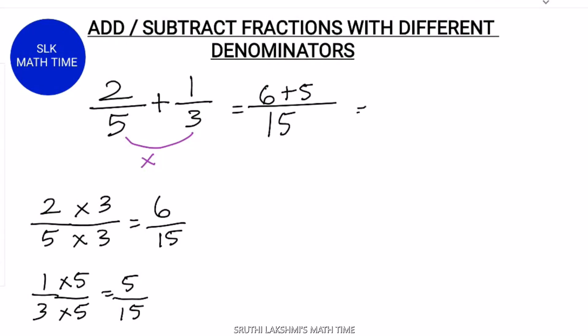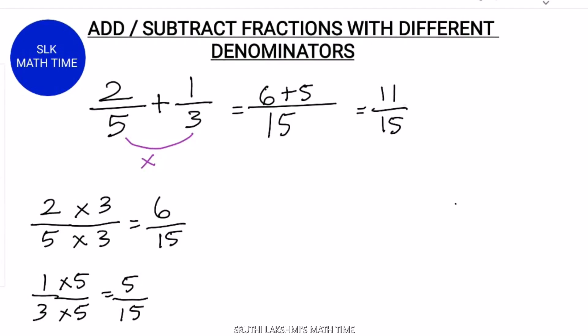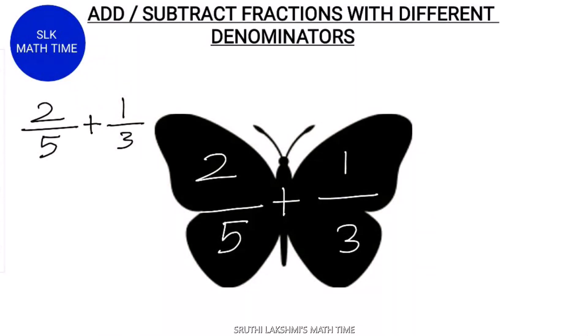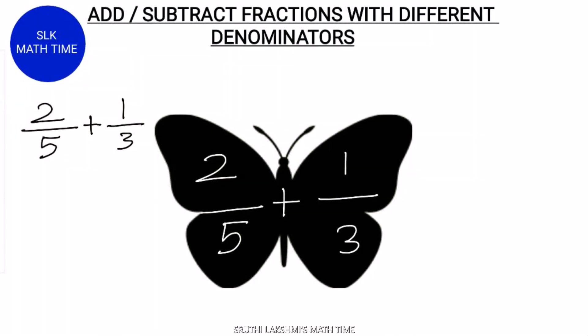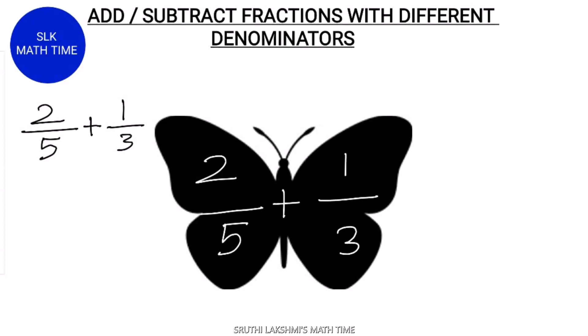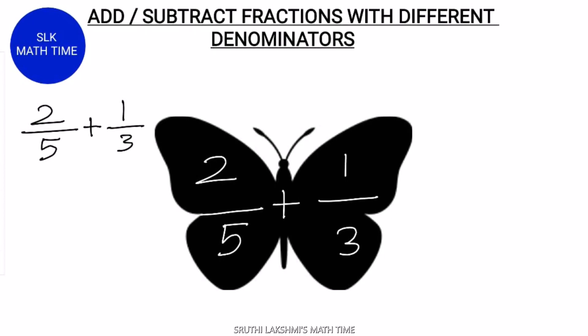6 plus 5 is 11, so 11 by 15. So 2 by 5 plus 1 by 3 is 11 by 15. Let's see an easier method to add 2 by 5 plus 1 by 3. This is called the butterfly method.